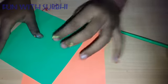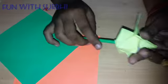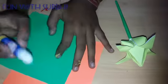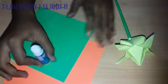green color paper for the stem, and you can use any color for the flower. I am using orange and blue. So let me start it.